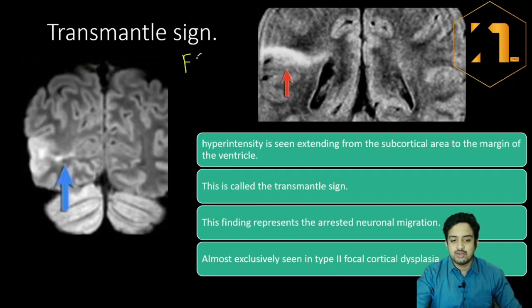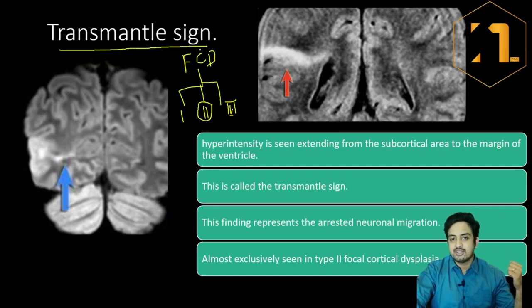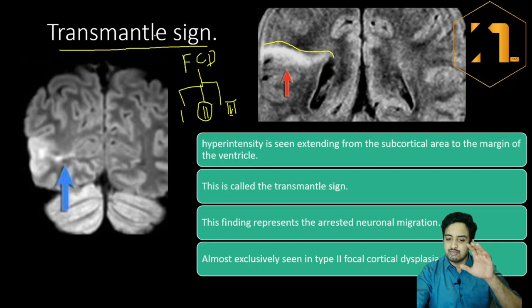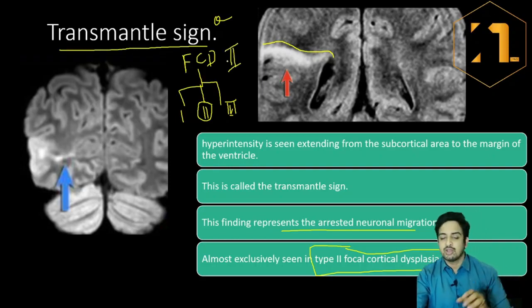There are three types of focal cortical dysplasia: type 1, type 2, and type 3. In type 2, there is a peculiar sign called the Transmantle sign. The Transmantle sign shows hyperintensity extending from the subcortical white matter to the margins of the ventricle. This represents abnormal neuronal migration and is exclusively seen in type 2 focal cortical dysplasia. This is an important MCQ point — Transmantle sign is always type 2.